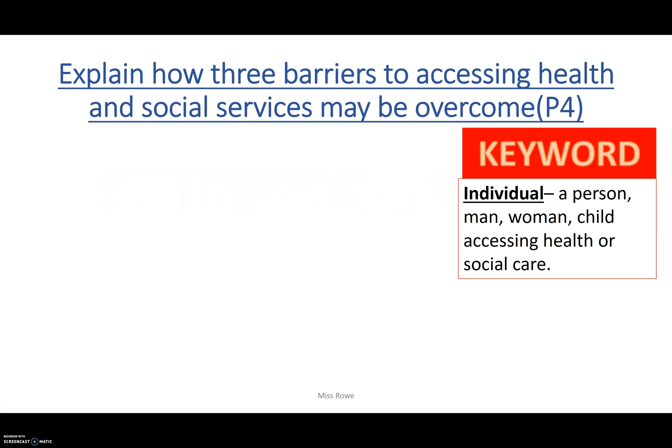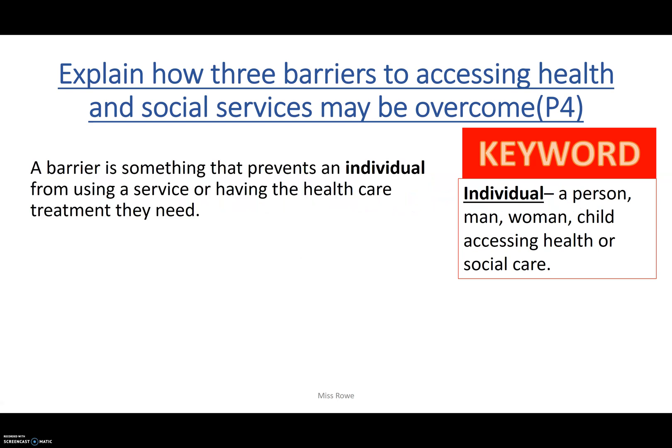So P4: a barrier is something that prevents an individual from using a service or having the healthcare treatment they need. And 'individual' is a key word. Same as some of the other ones we went over last lesson — client, service user, client group, individual, and local. Make a note of that in your exercise books or in your folder.